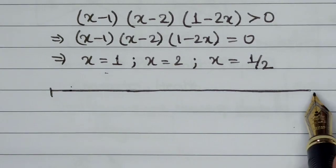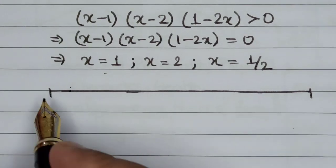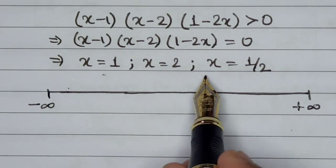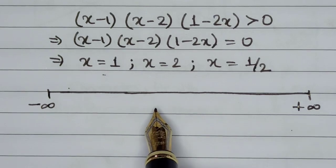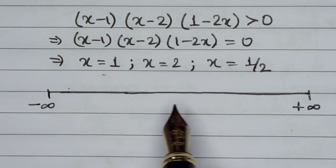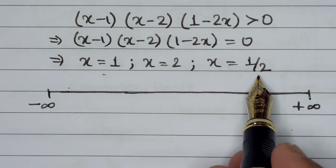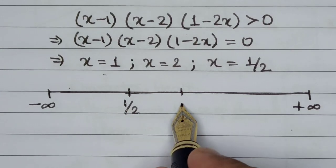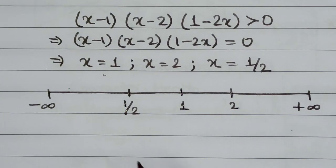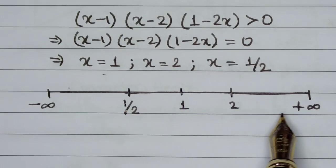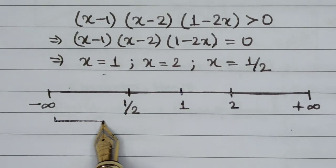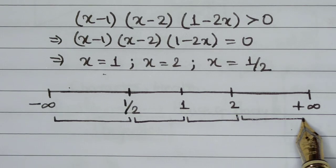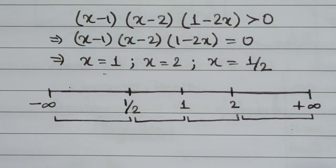I have drawn a number line where the endpoints are represented by negative infinity and positive infinity. We will mark the terminal points on the number line in the order they actually occur. Among the three values, 1/2 (or 0.5) has the lowest value, so it lies on the left-hand side, followed by 1, followed by 2. This divides the entire number line into four sections: section 1 (up to 1/2), section 2 (1/2 to 1), section 3 (1 to 2), and section 4 (beyond 2 to infinity).